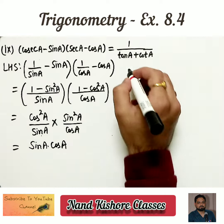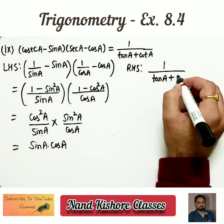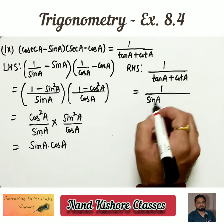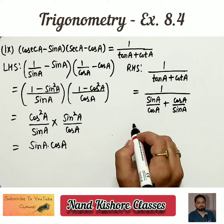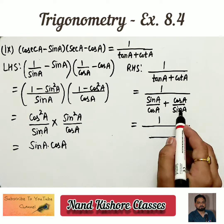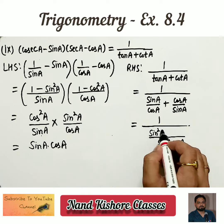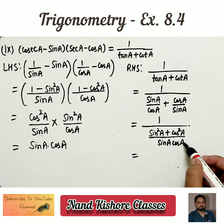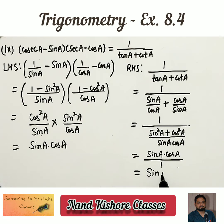The left side answer is sin a cos a. Now solving the right side: 1 by (tangent a plus cotangent a). Tangent a equals sin a by cos a, and cotangent a equals cos a by sin a. Taking LCM of sin a times cos a in the denominator: we get sin square a plus cos square a, which equals 1. So the right side becomes sin a cos a.